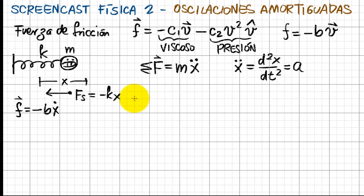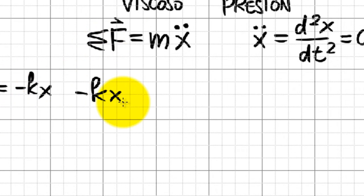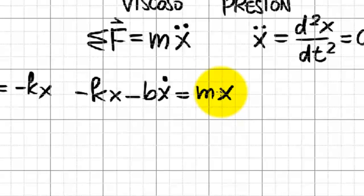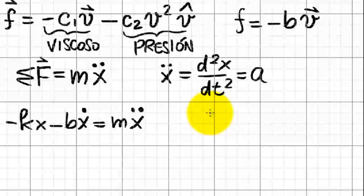Now, here in the left side, we have first the spring force, minus kx, and then the friction force, minus v times the velocity with this notation, and that is equal to m times x two dots, or ma.